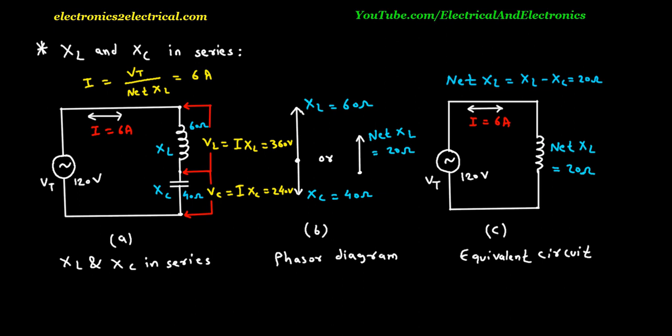The voltages VL and VC are opposite in polarity. The voltage across the inductive reactance leads the series current by 90 degrees, while the voltage across the capacitive reactance lags the series current by 90 degrees. Therefore, VL and VC are 180 degrees out of phase and of opposite polarity.